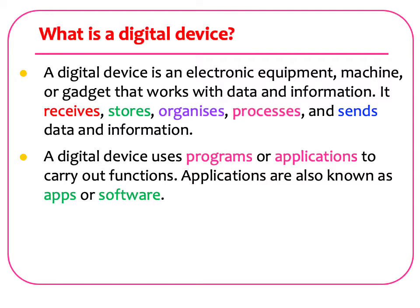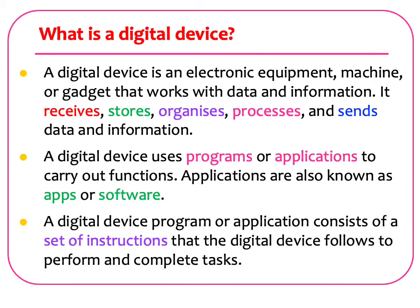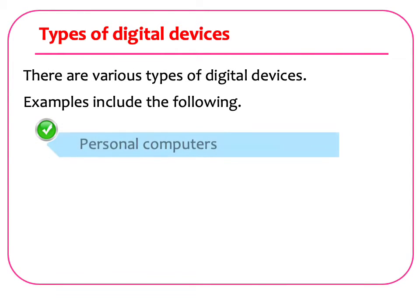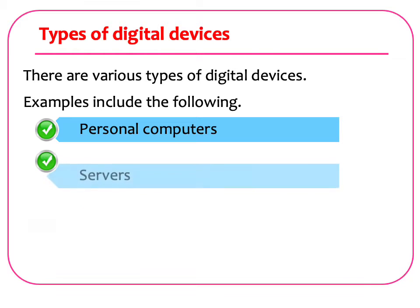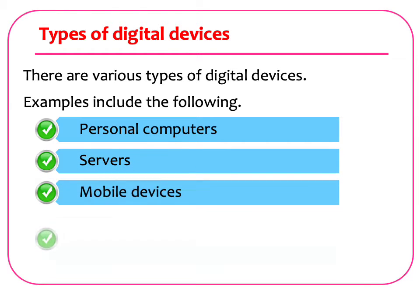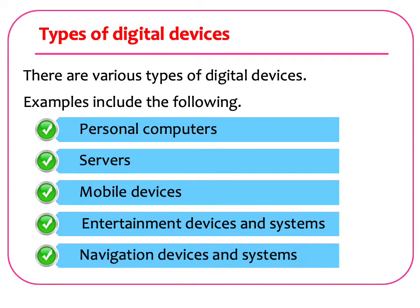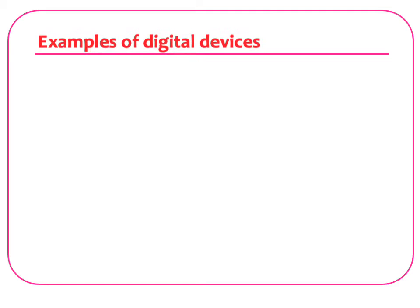A digital device uses programs or applications to carry out functions. Applications are also known as apps or software. A digital device program or application consists of a set of instructions that the device follows to perform and complete tasks. There are various types of digital devices, including personal computers, servers, mobile devices, entertainment devices and systems, and navigation devices and systems.